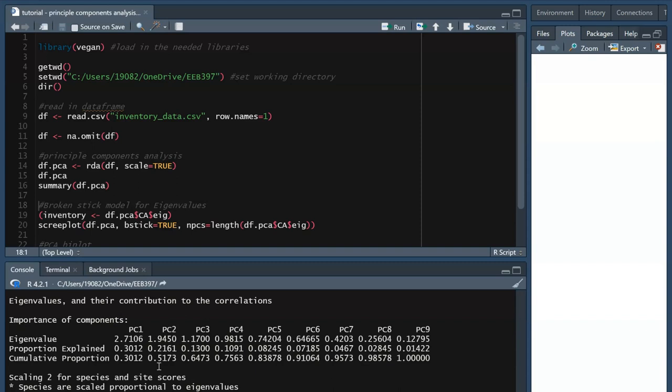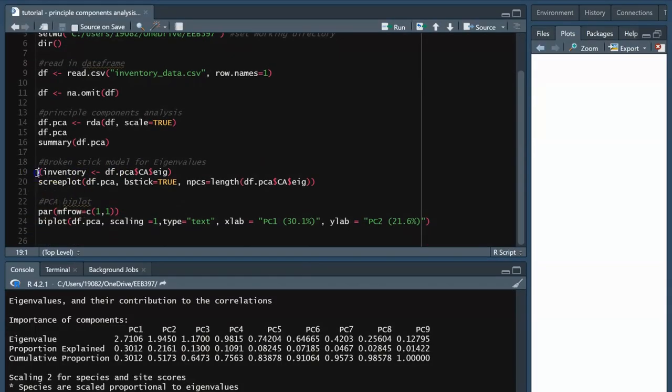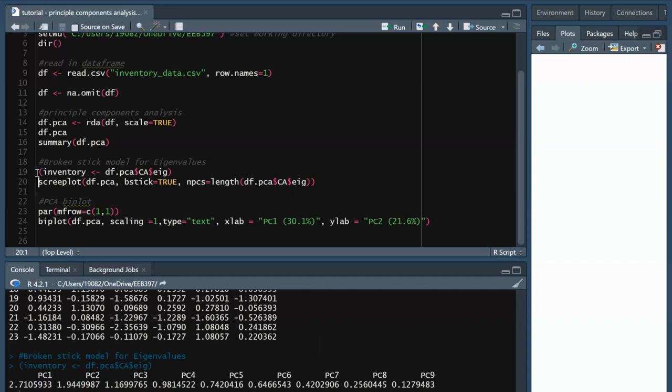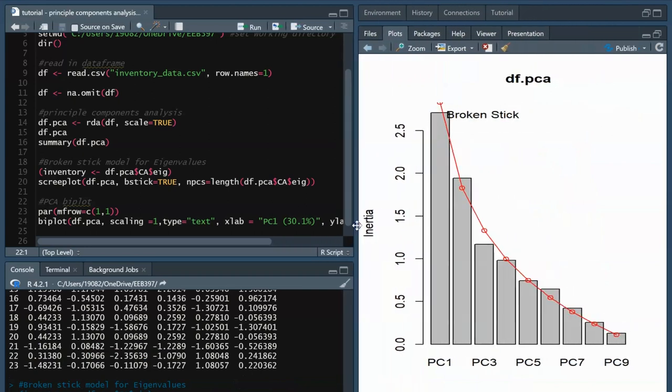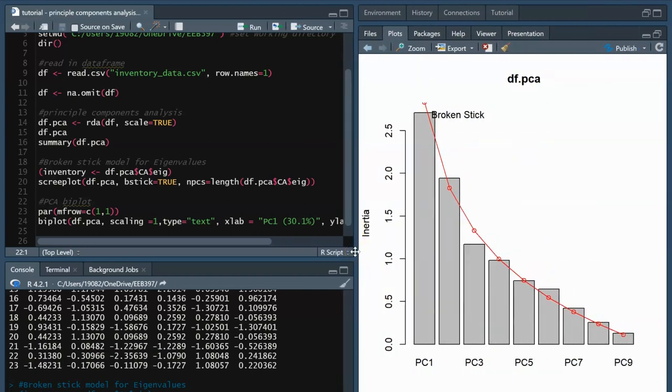We can create a broken stick plot to quickly visualize the variance explained by each principal component. This will show us the inertia, or variance of species scores, from the PCA output. This is different from how we were using the term variance before, which related to species presence. When we run the code for the broken stick plot, we can see that PC1 and PC2 have the greatest inertia, and this value decreases with increasing principal component.